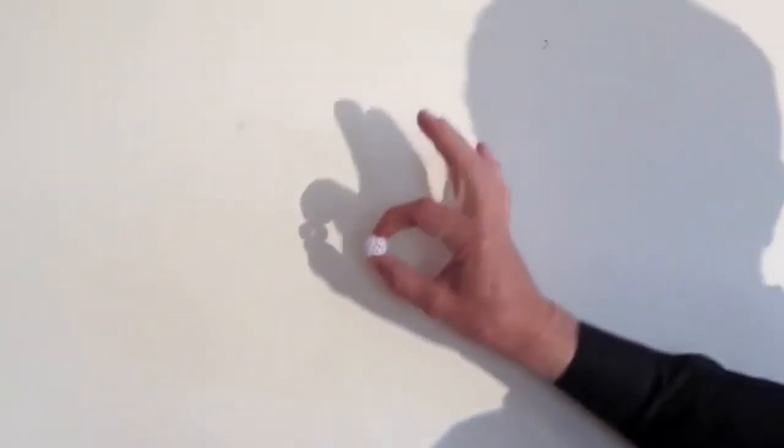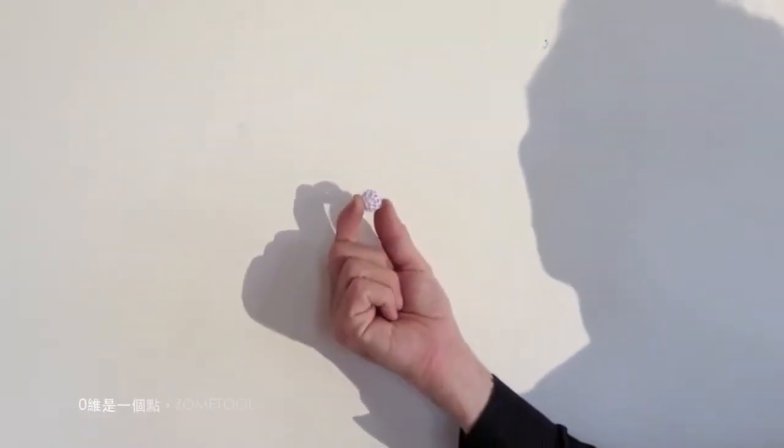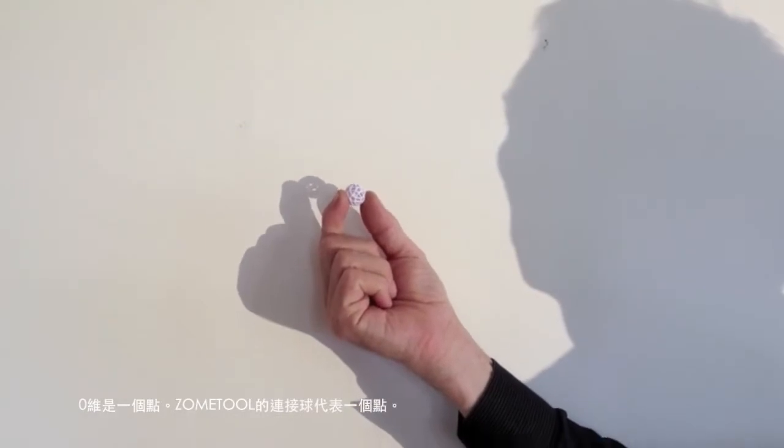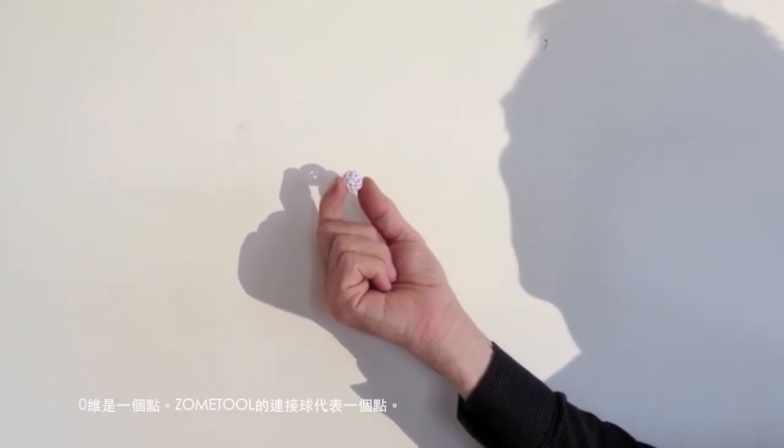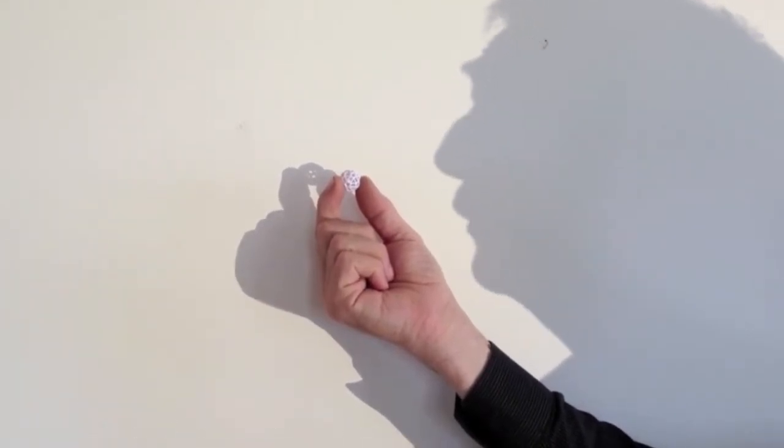So, in a world with no lines, no dimensions, you only have points. A no-dimensional universe would just be one point. The ZoneTool ball represents a point, or a zero-dimensional object. So you take zero dimensions, you get a point.